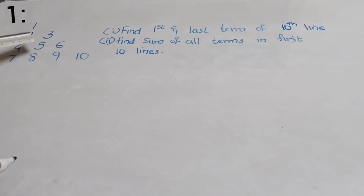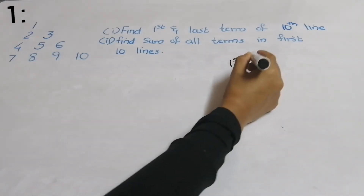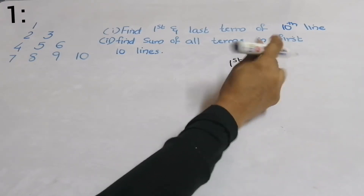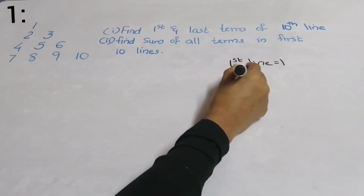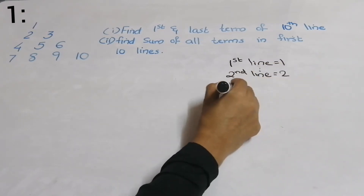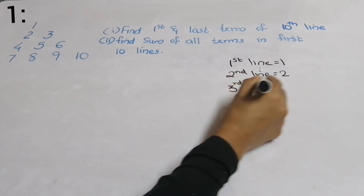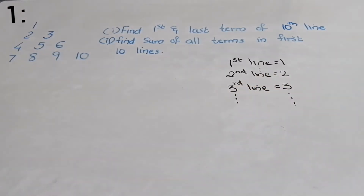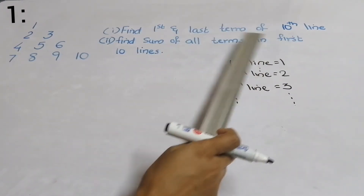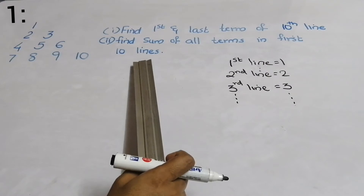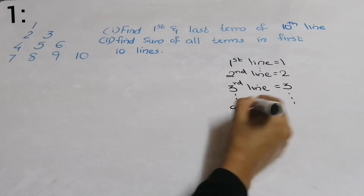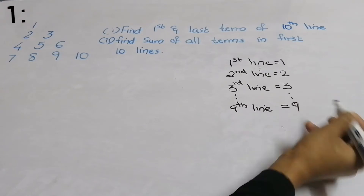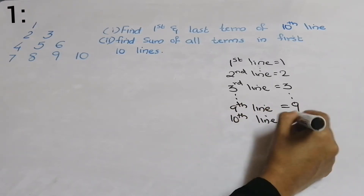In the first line there is one term, the second line has two terms, the third line has three terms. The question is regarding the 10th line — find the first and last term of the 10th line and also the sum of all terms in the first 10 lines. We have to consider the previous line also, so in the 9th line there will be 9 terms and the 10th line will have 10 terms.